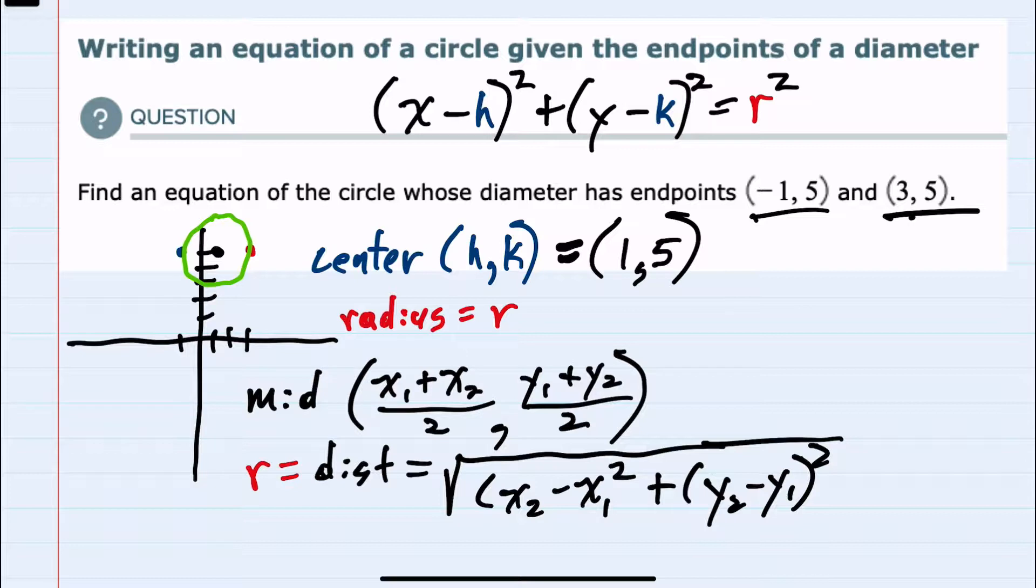we would want to use the two points of the center, which we previously found, and then one of the two points at the end of the diameter. Using the distance formula would give us that length.